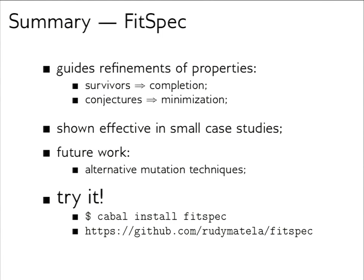We have time for some questions. An audience member asks: if you know a function is a fixed point, could you mutate the thing inside the fix rather than the entire function — making it slightly grey-box? That would be interesting. In the paper, some mutants we knew should survive couldn't be generated due to limitations in our method, so making it slightly grey-box could help generate those. That's a good path for investigation.